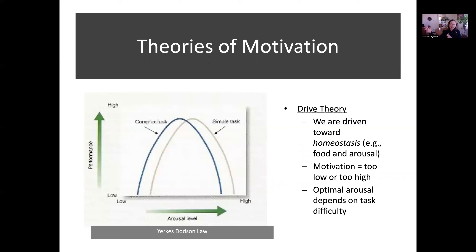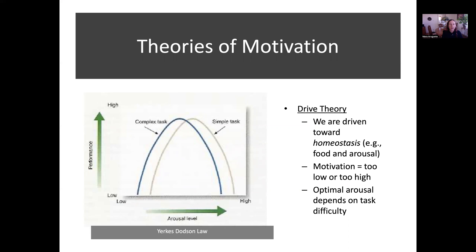Motivation comes when things get too high or too low, and that relates to the level of arousal — how stressed you are. There's a law called the Yerkes-Dotson Law, and you can see it in this picture. We do best when we're a little bit stressed, not too stressed. A little stress before a test makes you study, which is good for performance. But if you're too stressed, it's hard to think and your performance suffers. There's an optimal arousal level — that is our homeostatic arousal level.